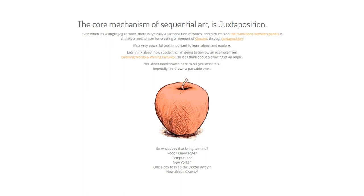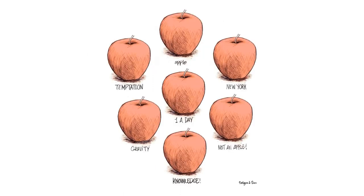An apple has cultural connotations. In the West, some of the ideas that might come to mind are food, knowledge, temptation, New York, one a day keeps the doctor away, or gravity. But because it's a semi-realistic apple, probably they didn't jump to mind — mostly you probably looked at it and said, 'oh, it's an apple.' But if I put the words I just mentioned below the apple, now I'm creating a moment of juxtaposition between a picture and a word. That bookends an idea — a moment of closure as Scott McCloud described it. Even though none of these images strongly, iconically represents any of these ideas, they all reference something that, if you're aware of the cultural connotations, will immediately come to mind.